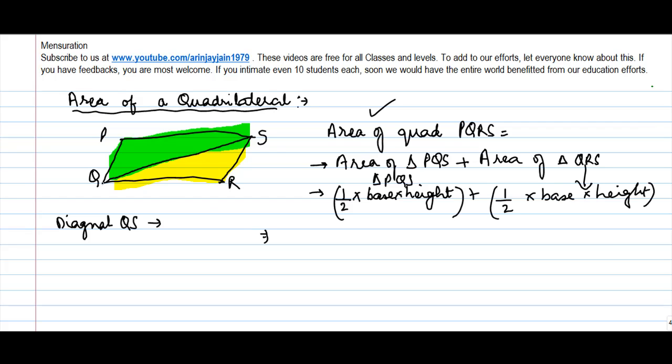If you see triangle PQS, what is the base? Half into base. Base is QS into height. We don't know what is the height here, so let us draw a perpendicular to QS and let's denote this as H1.